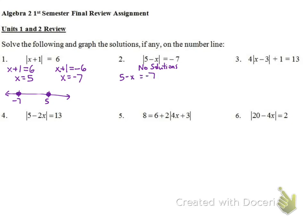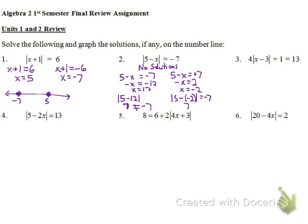Setting up: 5 - x = -7 and 5 - x = 7 gives x = 12 and x = -2. But checking: |5 - 12| = |-7| = 7, which is not equal to -7. And |5 - (-2)| = 7, also not equal to -7. This confirms no solution — checking our answers is important for catching this.